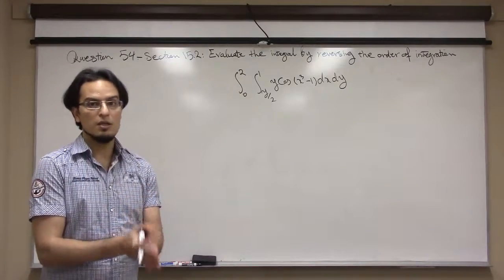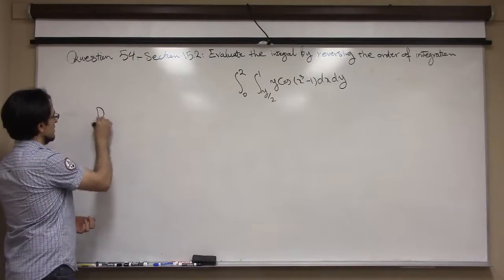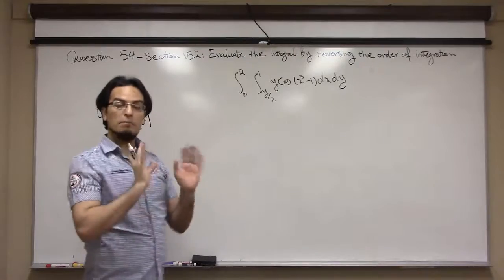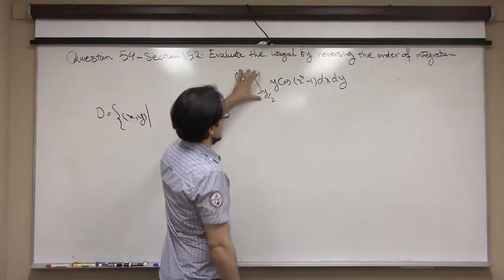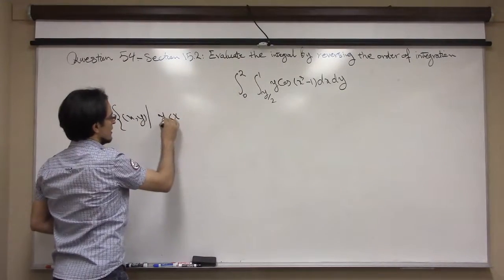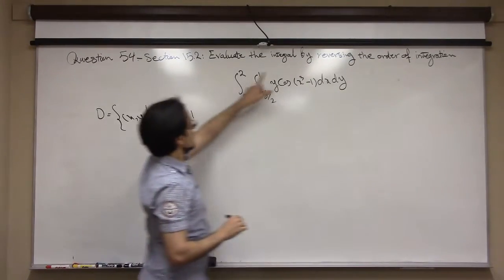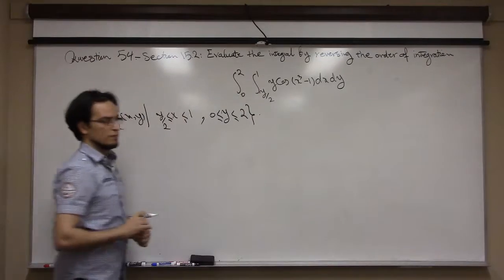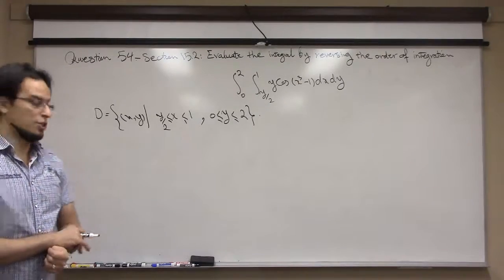To reverse the order of integration, first you have to see what your region is and then rewrite your region in the other type. The boundaries of the integral describe the region explicitly: the inner variable is x, and x goes from y/2 to 1, and the outer variable y has boundaries 0 and 2.